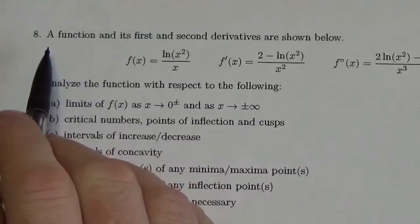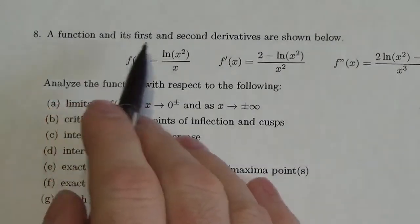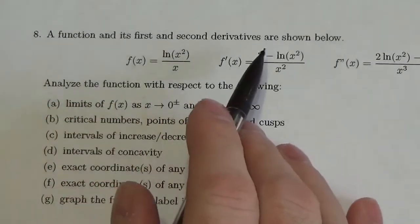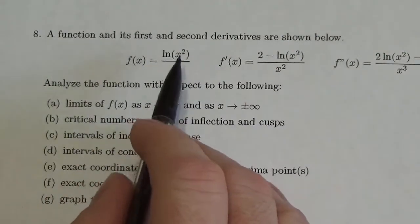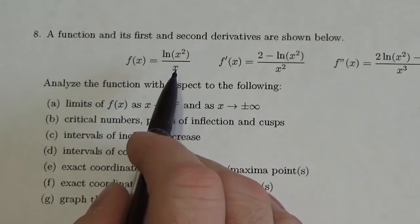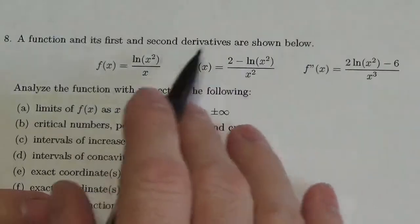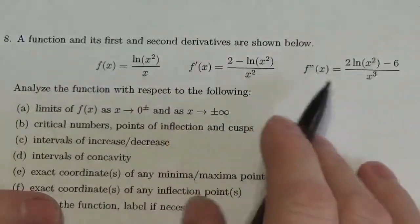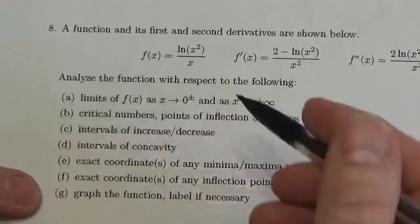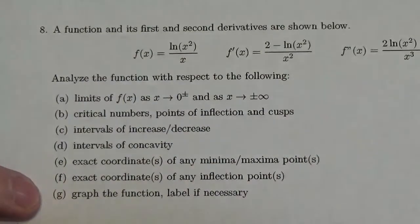Alright, hi everybody. This question says a function and its first and second derivatives are shown below. Our function is the natural log of x squared over x, and we've got the first derivative and the second derivative. We're going to go through the steps required to graph this thing.